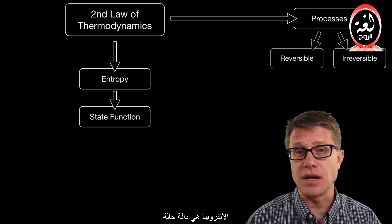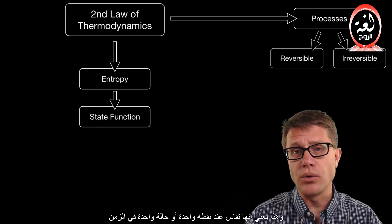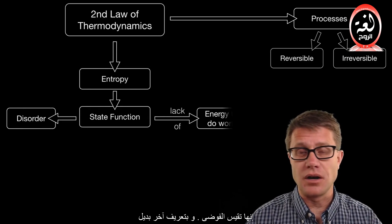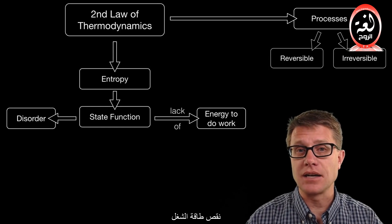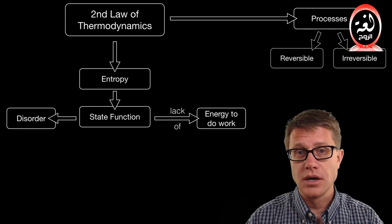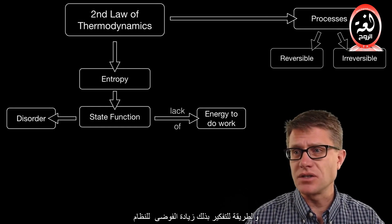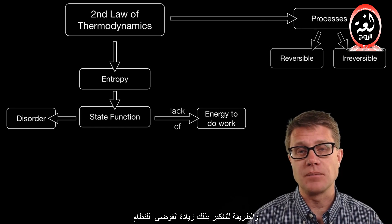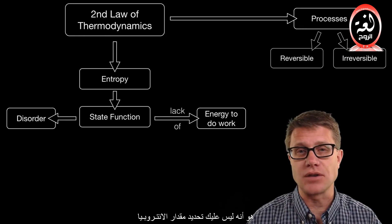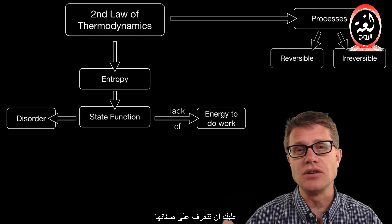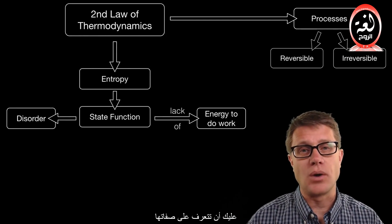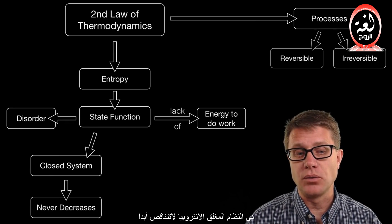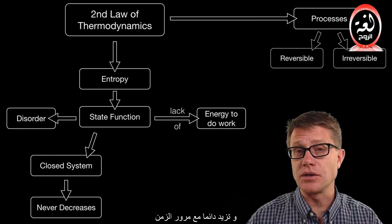Entropy is a state function. That means it is just measured at one point or one state in time. It measures disorder — or alternatively, it is the lack of energy to do work. You can think of it as increasing chaos of the system. In AP Physics you do not have to quantify entropy; you just have to know its quality — in other words, what it is. In a closed system the amount of entropy will never decrease; it always increases over time.